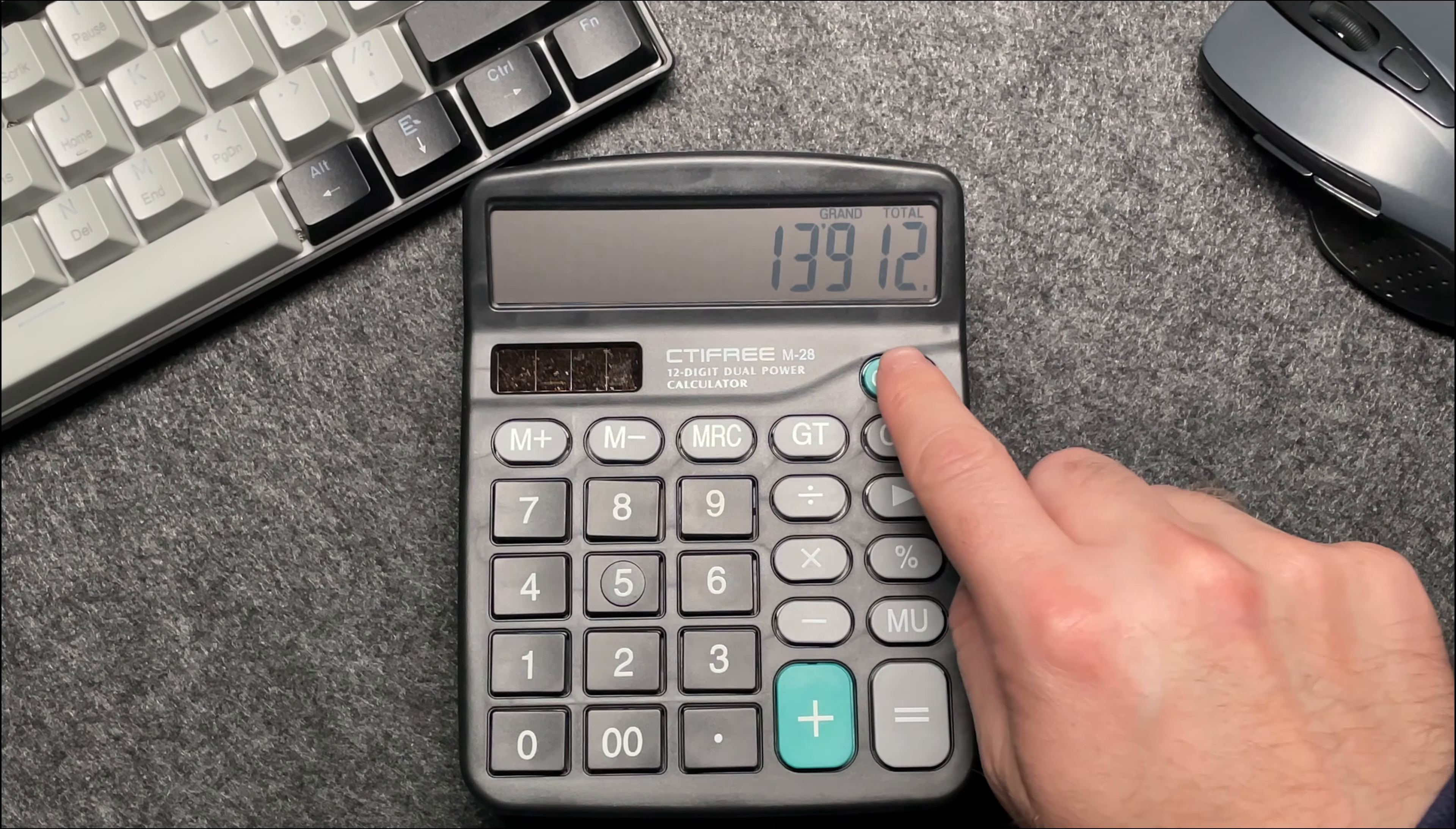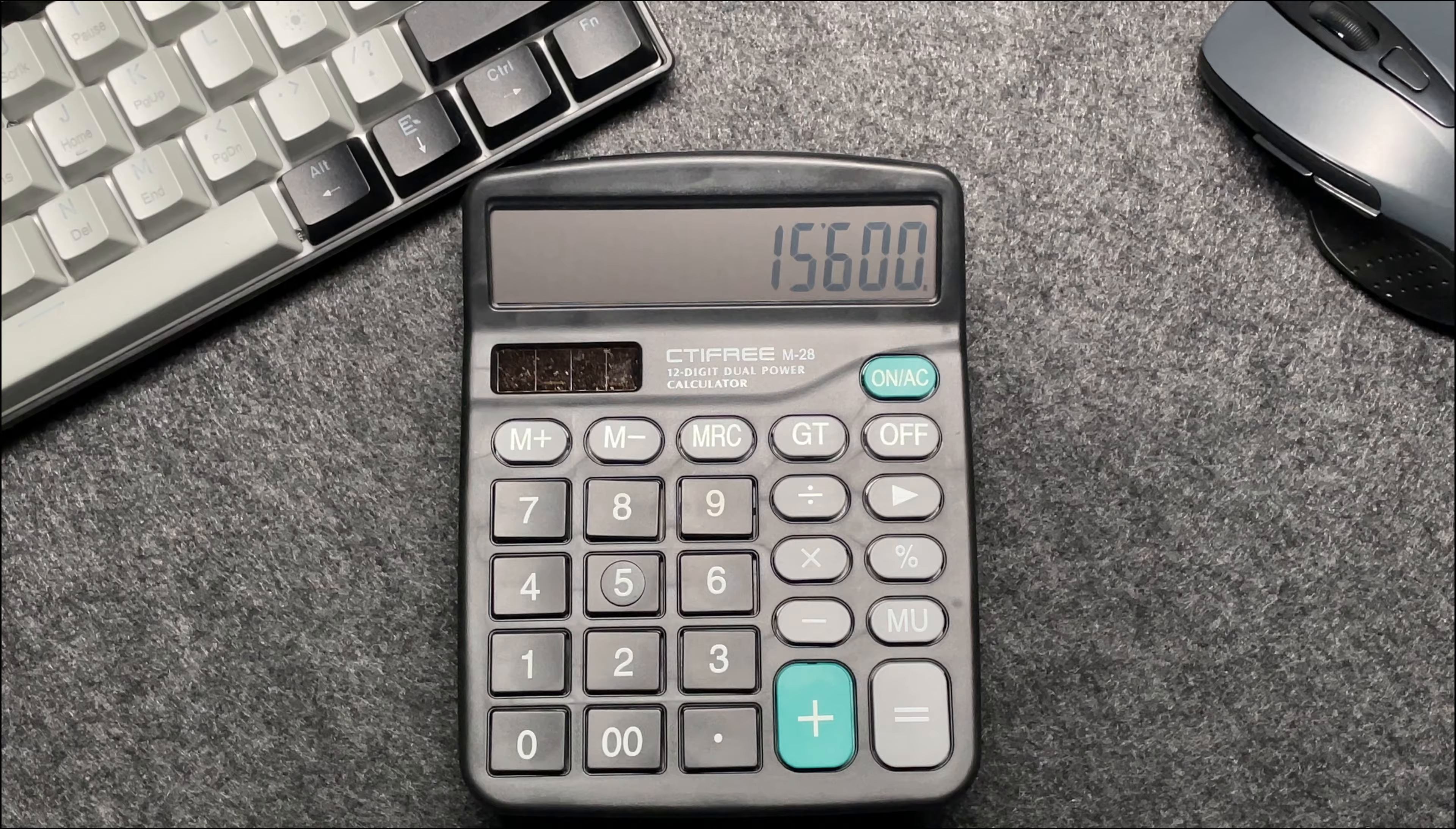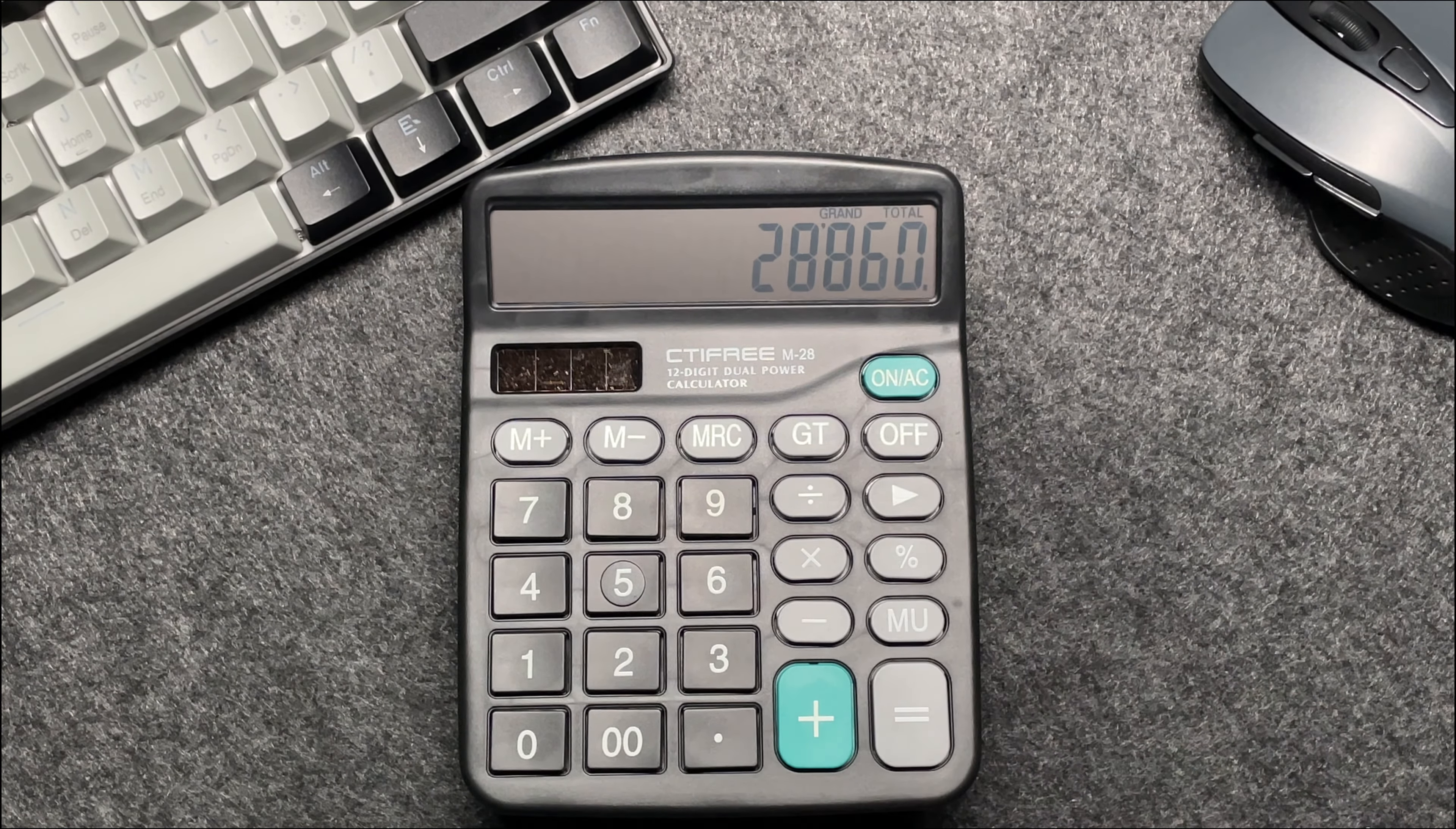Now, let's have a look at another example. Suppose this time we have an item priced at $15,600 and we want to increase this price by 85%. Again, let's press that plus button, then type 85 for the 85% increase. Finally, press the percentage button to get the final price.